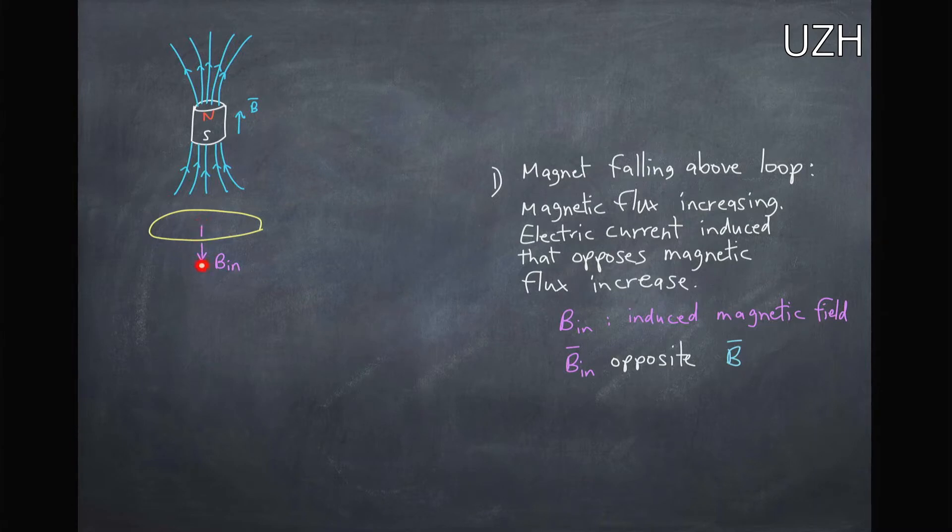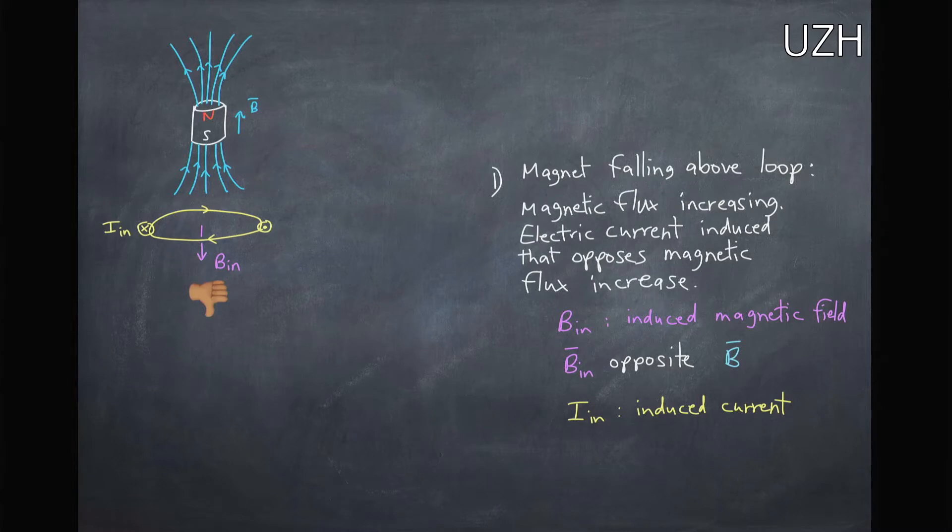So we're going to get an induced magnet in this current loop pointing in the opposite direction. You can figure out the direction here using the right-hand rule, and I've drawn in the current here which is entering over here and going around like this, giving us this opposite induced magnetic field.